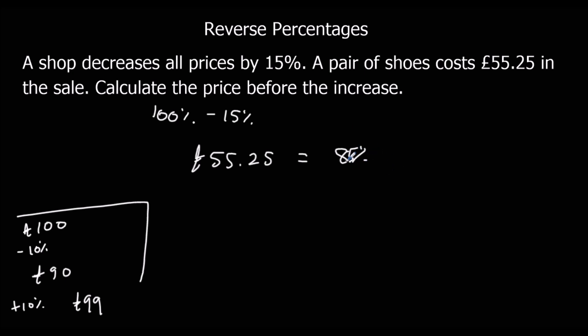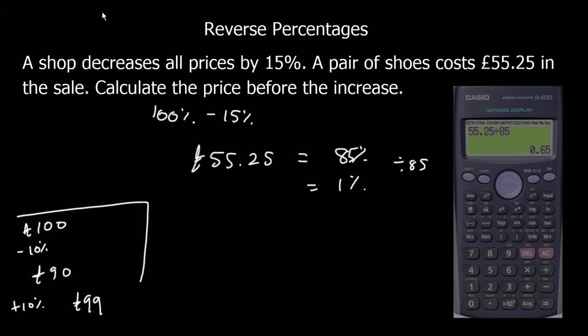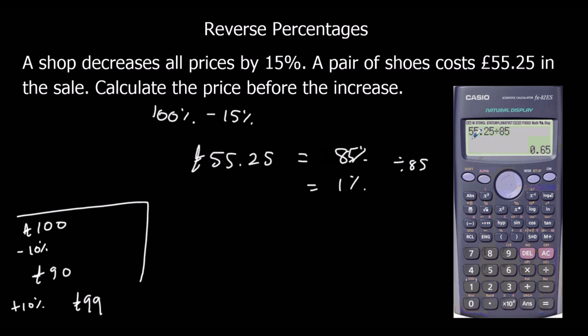Then if I want to find 1%, I divide it by 85. If I do that in the calculator, £55.25 divided by 85, press the SD button, I get £0.65. And to find the original price, I want 100%, so I times it by 100. This times 100 is £65, so the original price was £65.